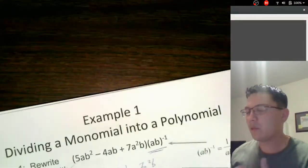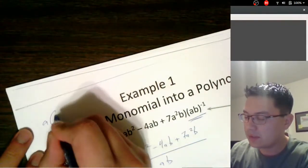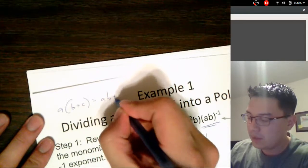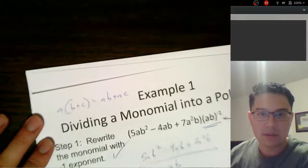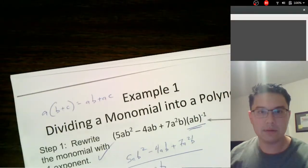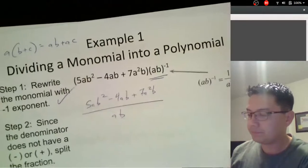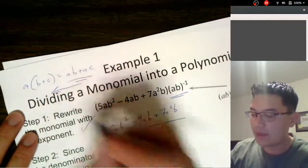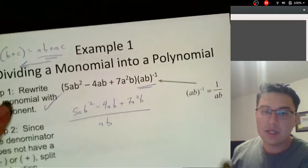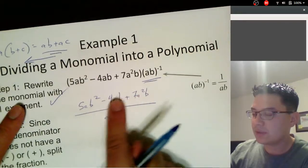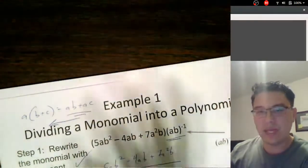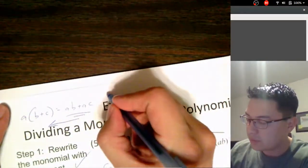The key to what we're going to be doing here — for those who need a reminder — distribution is when we have something like a times (b + c). We distribute the a through, giving us ab + ac. What we're going to do though is start here and go backwards — we need to reverse the process. So we're going to look at every single term we have and look for what is common. This is reverse distribution.